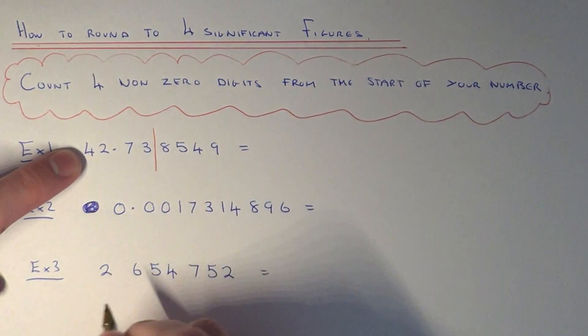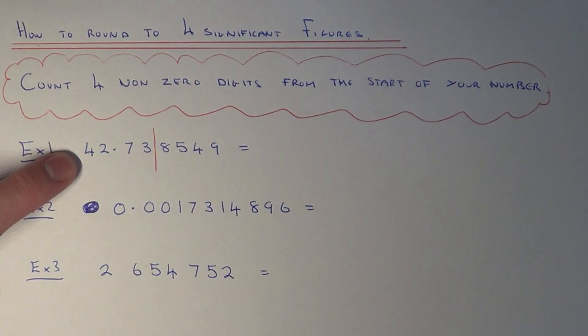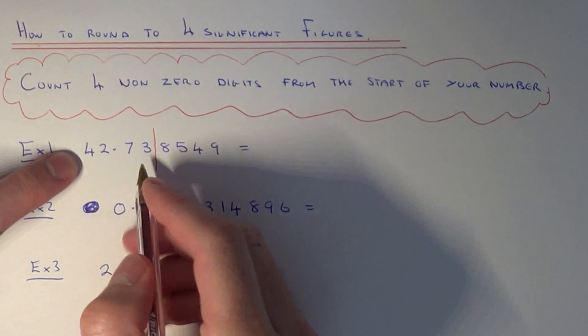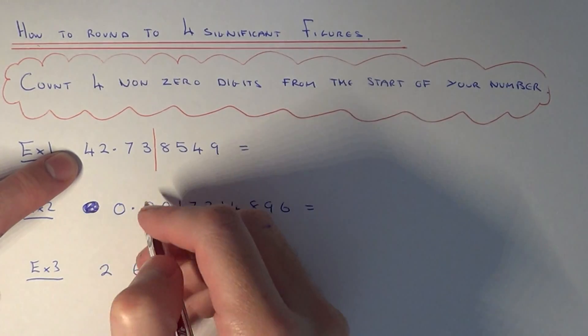So we need to cut the number off here. We've got two possible choices. We can either leave the number the same as 42.73, that's if we round it down, or if we round the number up it will be 42.74. You just add one on to this digit here.